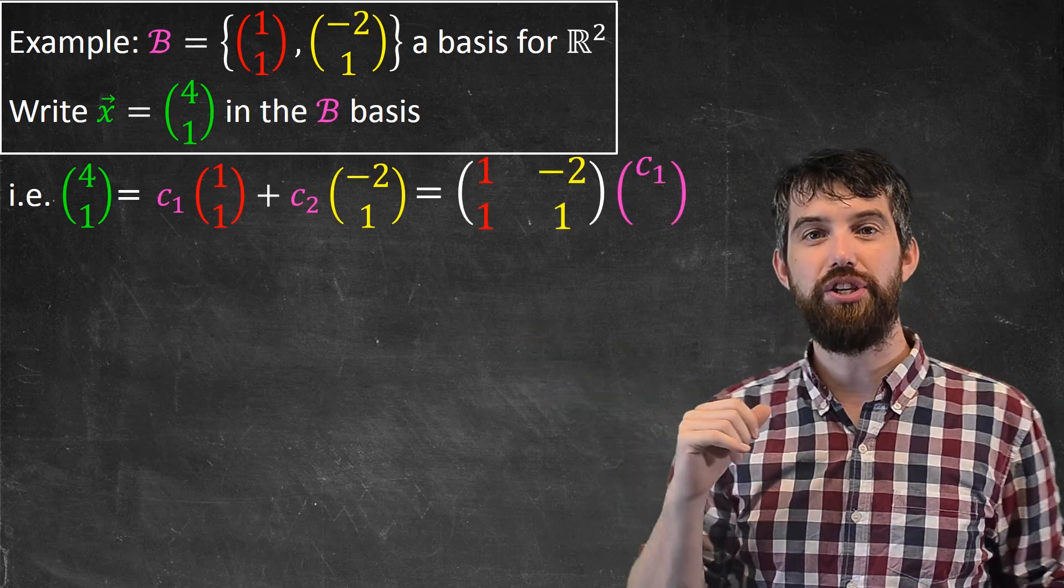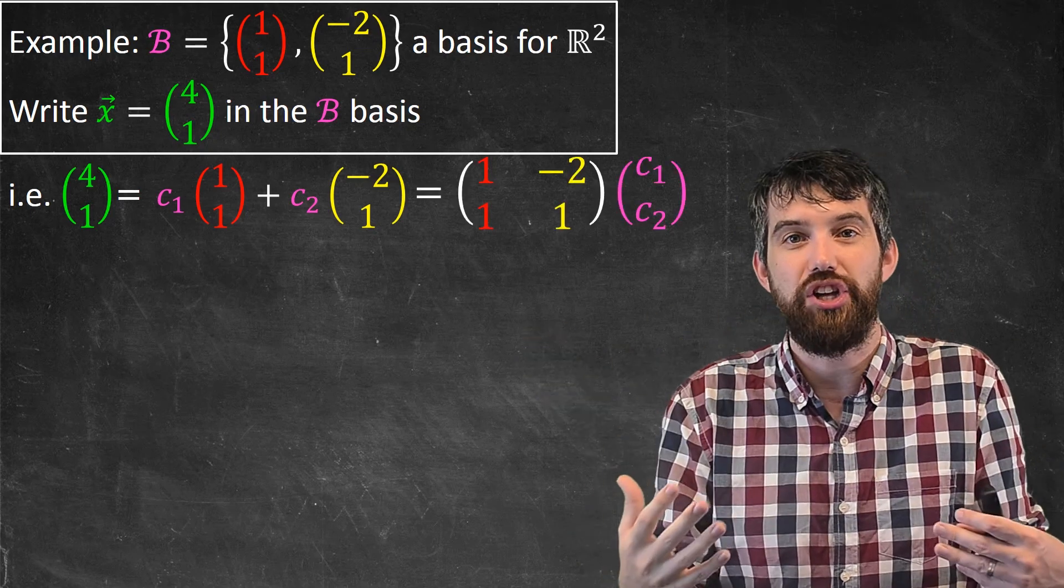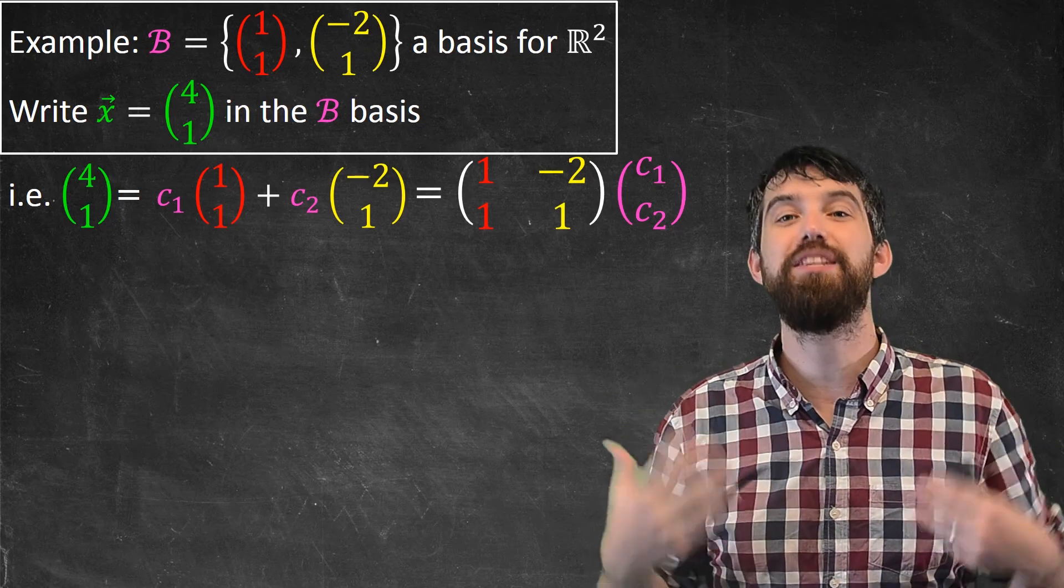Indeed, writing this linear combination is just the same thing as saying that this is the multiplication of the c_1 and c_2 by this particular matrix.